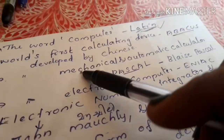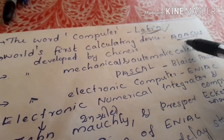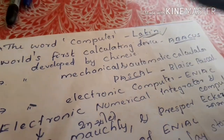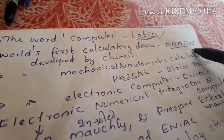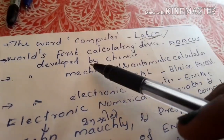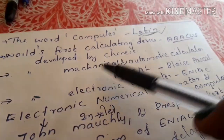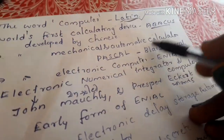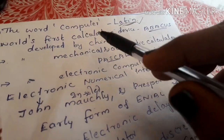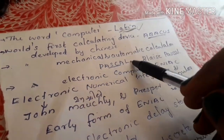The world's first calculating device. It is the first calculator. The first calculator was developed by Chinese. It is the first mechanical and automatic calculator — we will learn the difference in the name of Abacus.